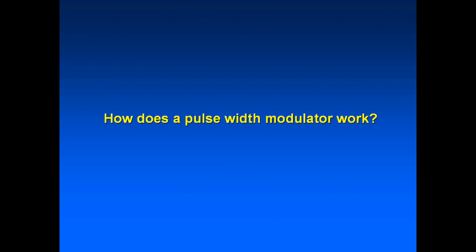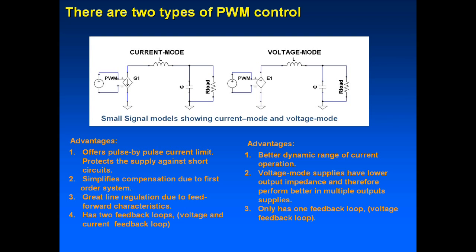So how does a pulse width modulator work? This is based on one of the older UC pulse width modulators — a very general explanation. There are two types of PWM control. When you look at PWM chips, the first originals that came out were voltage mode, and then later current mode was invented. Voltage mode was first, and current mode came second.